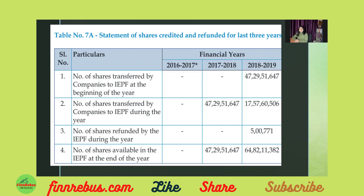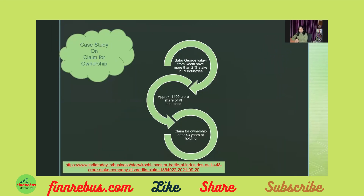This data is as of 31st March 2019, before the pandemic. Imagine the situation after COVID-19 — what happened to the wealth of those people who suffered a mishappening during the pandemic and had not added a nominee. A recent case study is the claim for ownership by Mr. Babu George Walawi, who held more than 2% stake in PI Industries purchased 43 years ago, whose today's valuation is above 1,400 crores. His ownership remains debatable — a case involving Mr. Babu George Walawi, SEBI, and PI Industries — making the situation very complex and complicated.